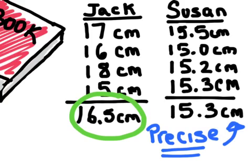Scientists never make a measurement only once — they always take many measurements to increase precision. If scientists find that they make the same measurement again and again, they can have confidence that their measurement is correct. Or if their measurement is always off by the same amount, they will be able to better figure out what the error is. Maybe the tool they are using is not calibrated correctly. Looking at Susan's measurements, she is generally always off by about 2 centimeters, so she may be able to narrow down why.